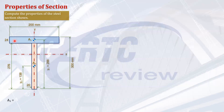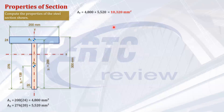Now let's compute the areas. Area 1 equals 200 times 24, which is 4,800 mm². Area 2 equals 276 times 20, which is 5,520 mm². So the total area of the section is Area 1 plus Area 2, giving 10,320 mm².